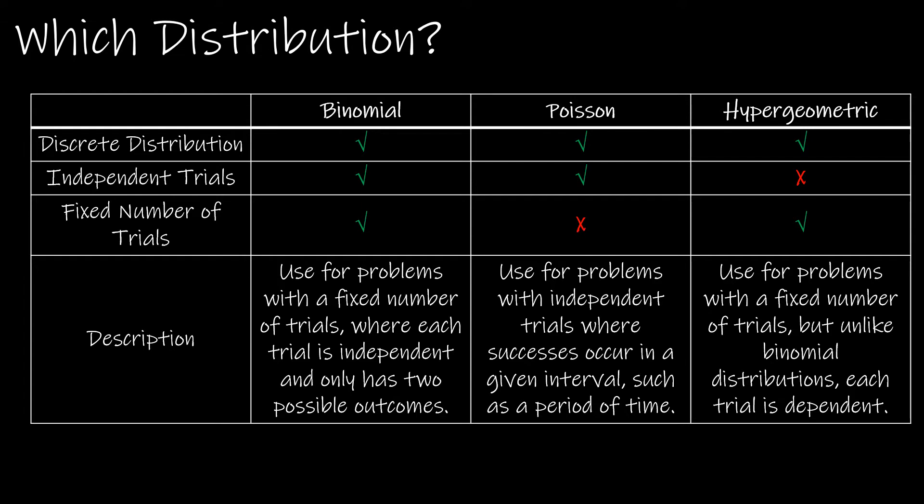A fixed number of trials applies to the binomial and the hypergeometric, which is why a lot of people get those two confused, whereas Poisson does not have a fixed number of trials. Here's a little description for each for when it should be used.